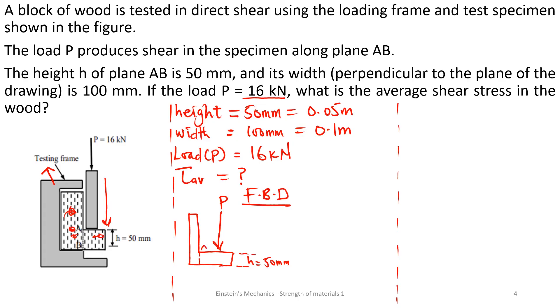So the joint here is A and this part is B. And we are also given that the width perpendicular to the drawing is 100 mm.